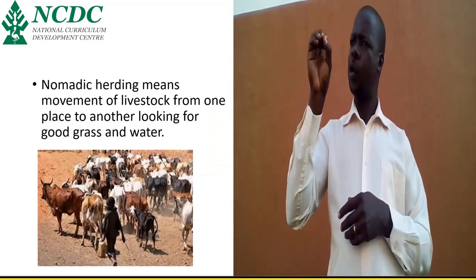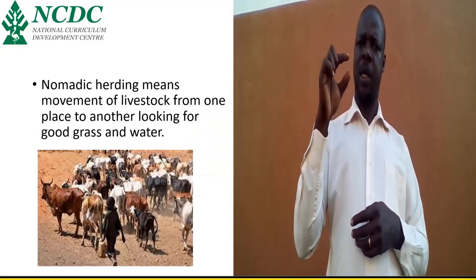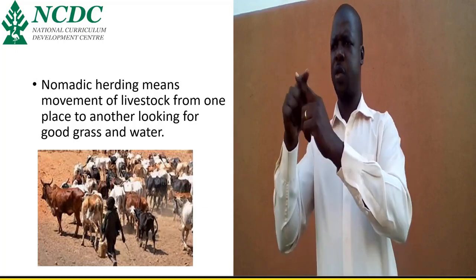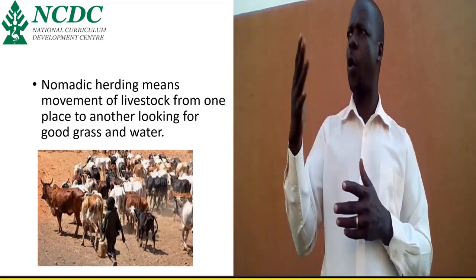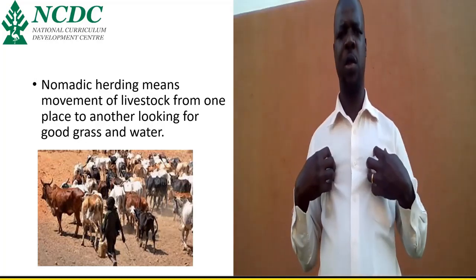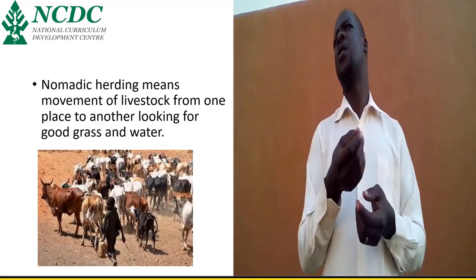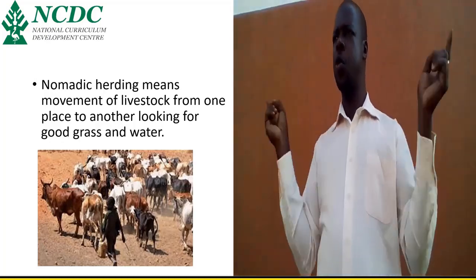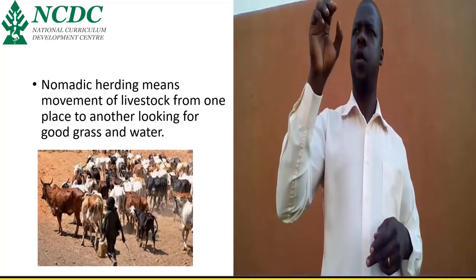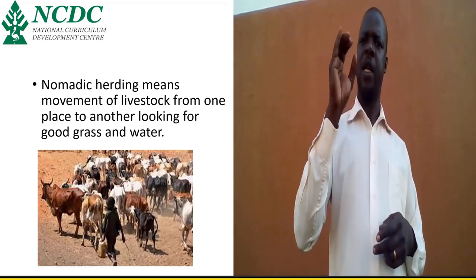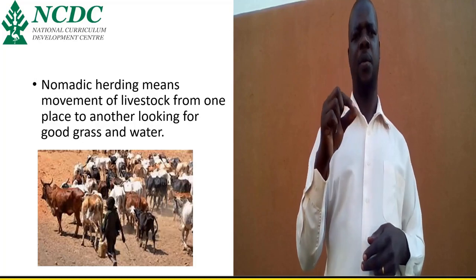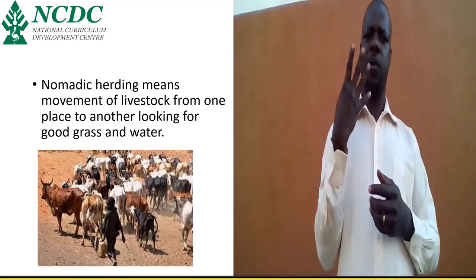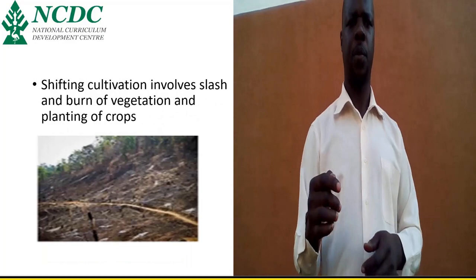Next, we have nomadic herding. What does it mean? Movement with animals from one place to another, looking for grass and water suitable for the animals. Long ago, land was never had owners. So people would move with their animals from one place to another in search for pastures and water. That is called nomadic herding — movement with animals from one place to another, looking for water and grass for them.